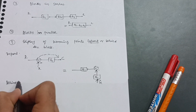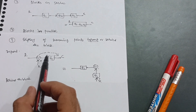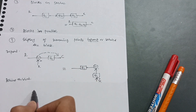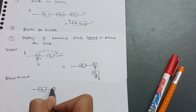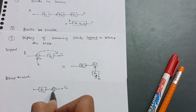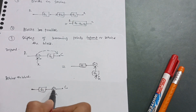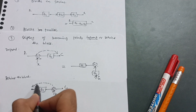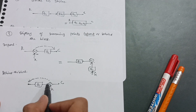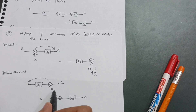The next case is behind the block. Suppose you have block G1, then the summing point, this is the required output, and this is the feedback. Now you have to shift the summing point behind the block. When shifting the summing point behind the block, you first write the summing point, then G1 as it is, then the required output.